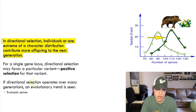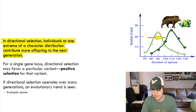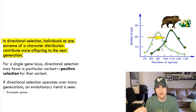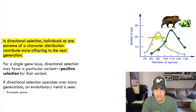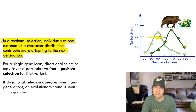Directional selection — individuals at one extreme contribute more offspring to the next generation. Take a plant being eaten by a boar: more spines make it harder for the animal to eat, so more spines equals better survival. That's directional selection — positive selection. The initial population had a certain number of spines, but over generations the number of spines increased. This is evolution.